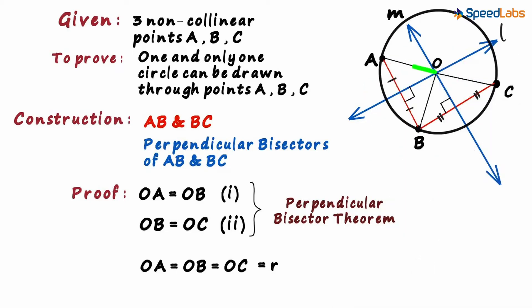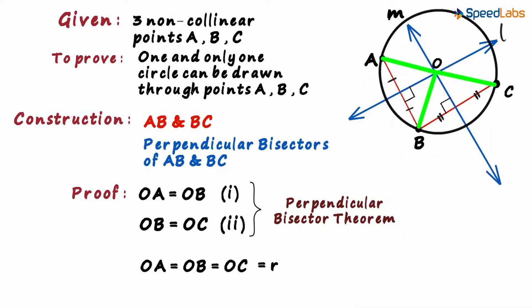This will be a circle with radius R that passes through points A, B and C. The theorem says that if we have three non-collinear points, there will be exactly one circle which passes through all of them.